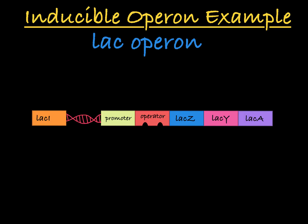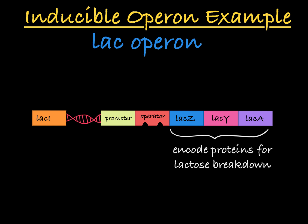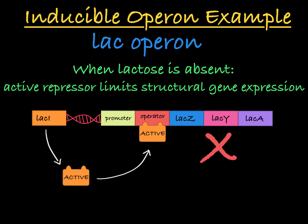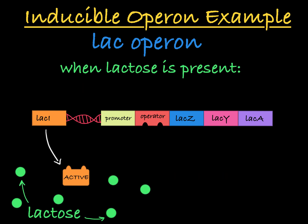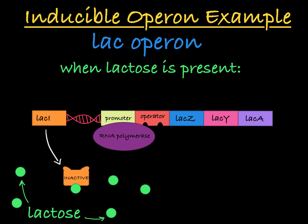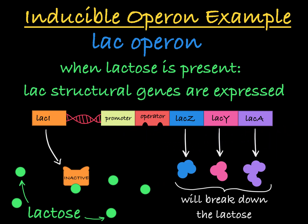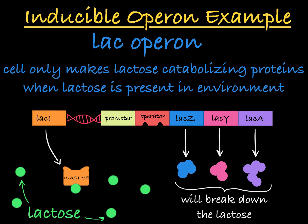An example of an inducible operon is the lac operon in E. coli. The genes in this operon encode proteins that help break down lactose for use in the cell. If lactose is not present, the operon repressor is active, preventing the cell from making proteins it doesn't need. When lactose is present, the repressor is inactive, and the genes that encode proteins necessary for the breakdown of lactose are transcribed and translated, allowing the cell to use the lactose. In this way, the cell is efficient, only making the proteins necessary to break down lactose when lactose is present.